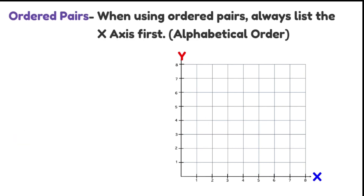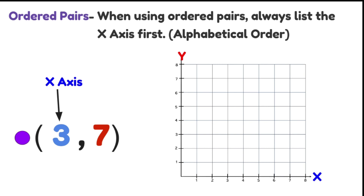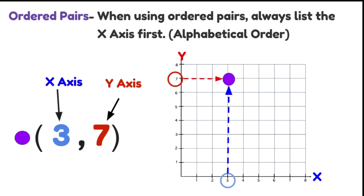Let's have a look at another one. Remembering x is always first — x then y. We have 3, 7. So we need to find 3 on the x-axis and 7 on the y-axis. There's the 3 and there's the 7. The point where these two meet is where we put our dot or our coordinate.